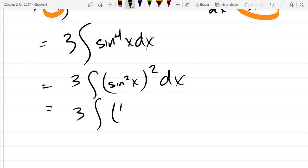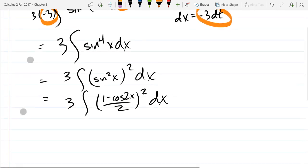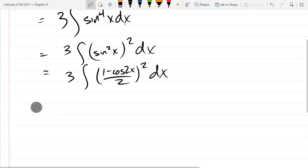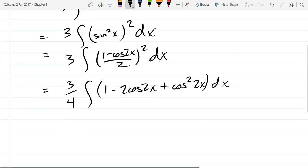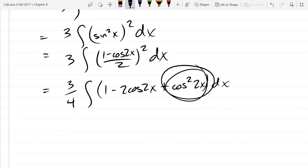All right, so sine squared, the way we deal with this, that's 1 minus cos 2x over 2 squared. So you just have to foil this out. So 2 squared is 4, so that's 3 fourths. So we're down here.